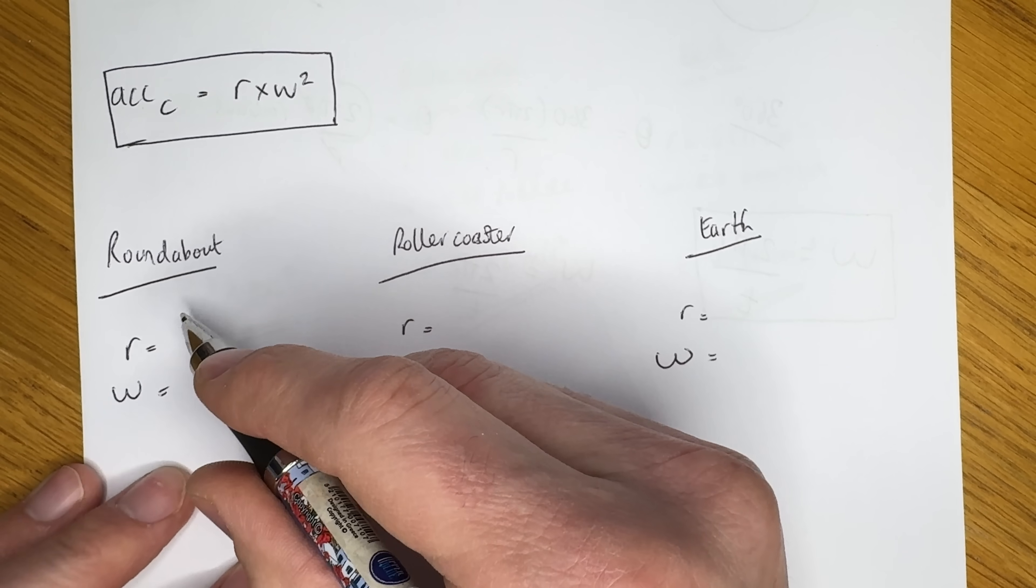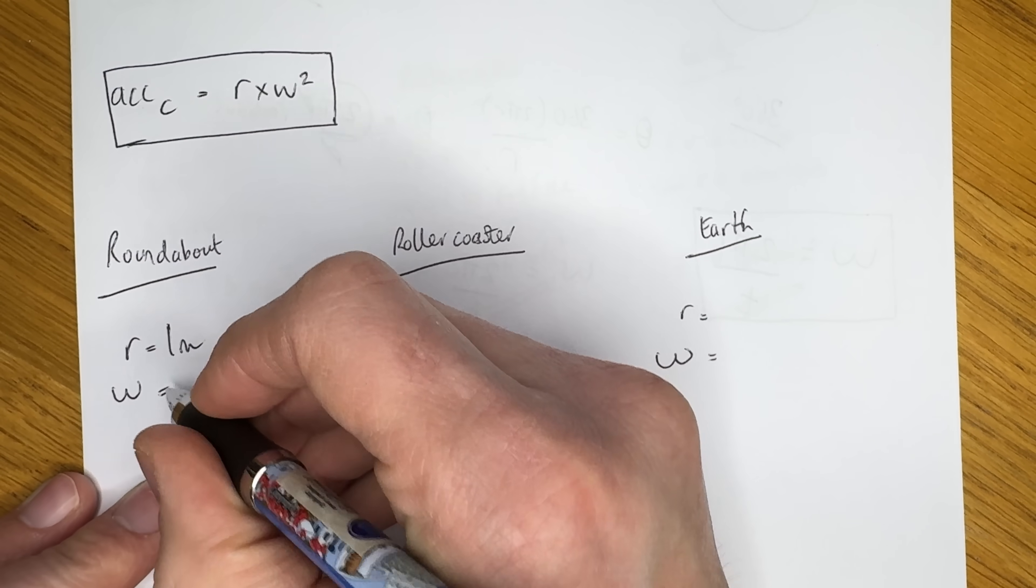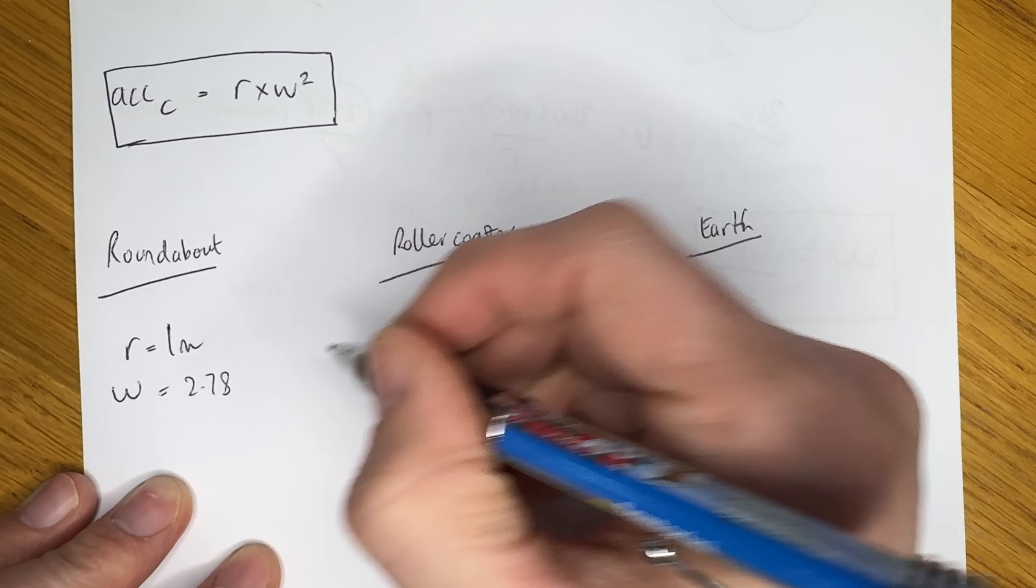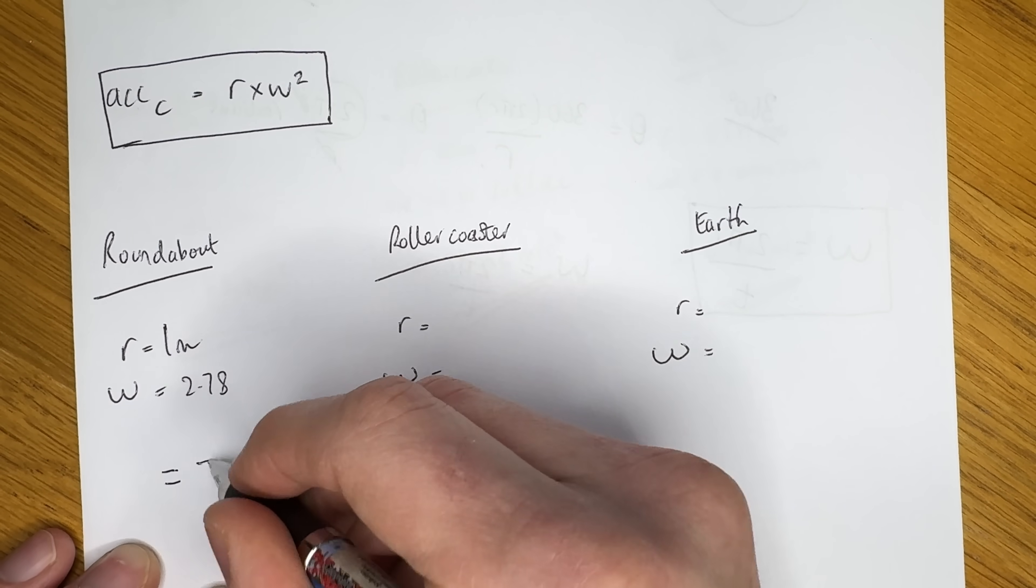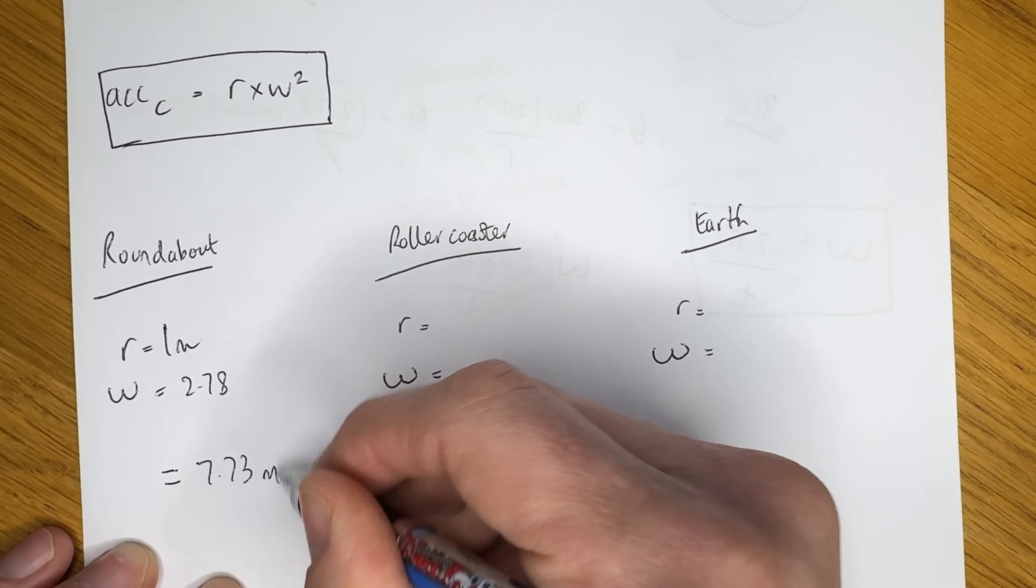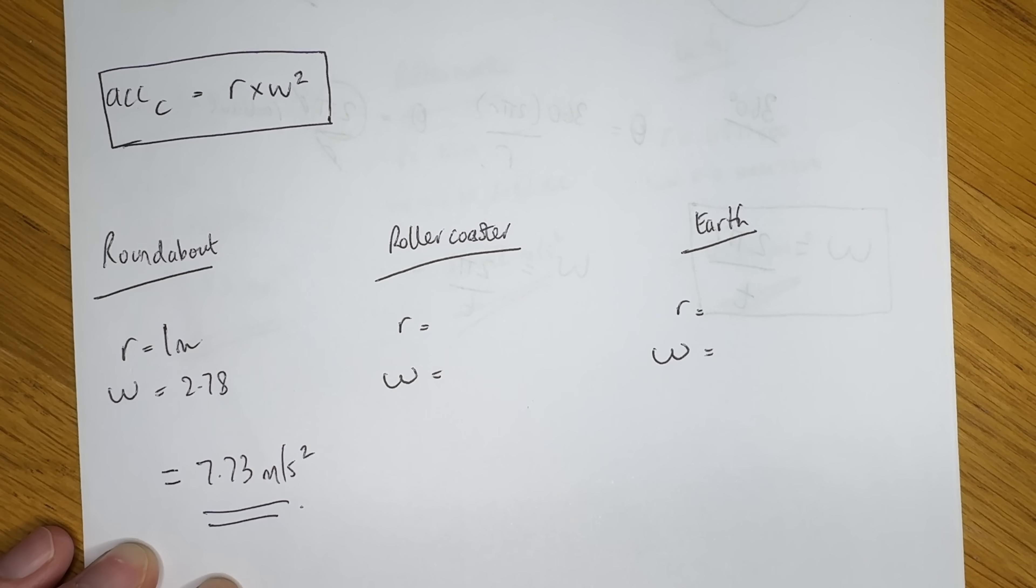Now let's start with the roundabout as before. So we know the radius is 1, and the angular velocity is 2.78 radians per second. Now if you multiply 1 by the square, we get 7.73 metres per second squared. So that's quite close to the acceleration caused by gravity on the Earth's surface.